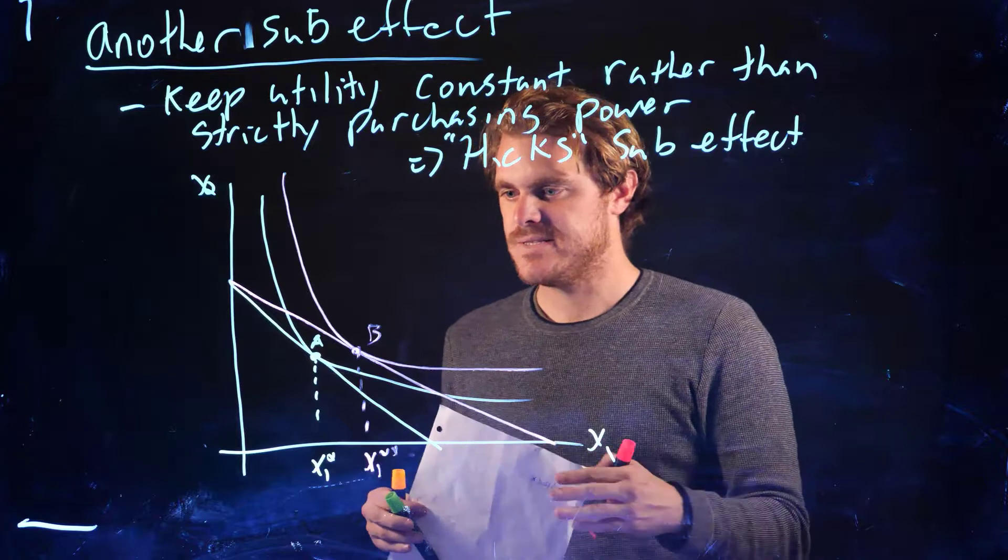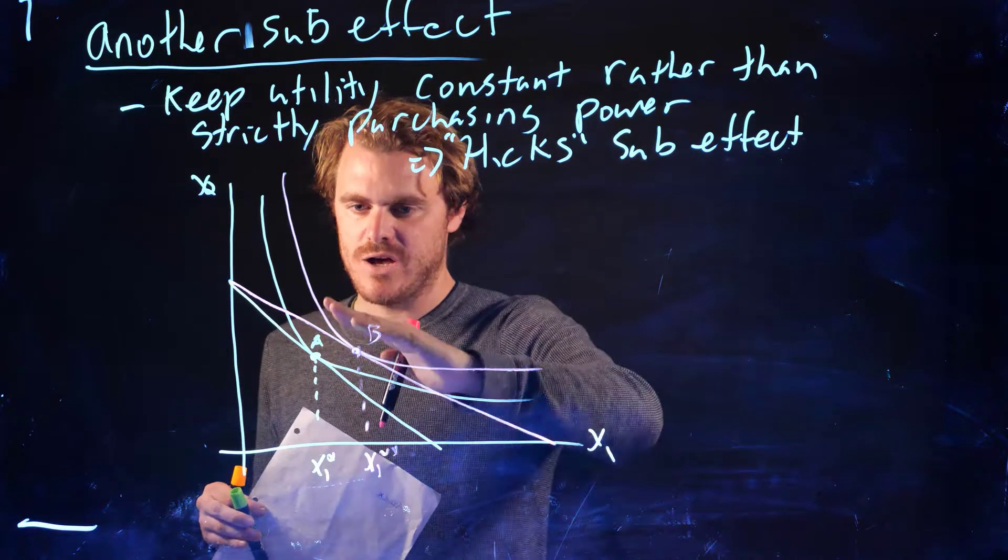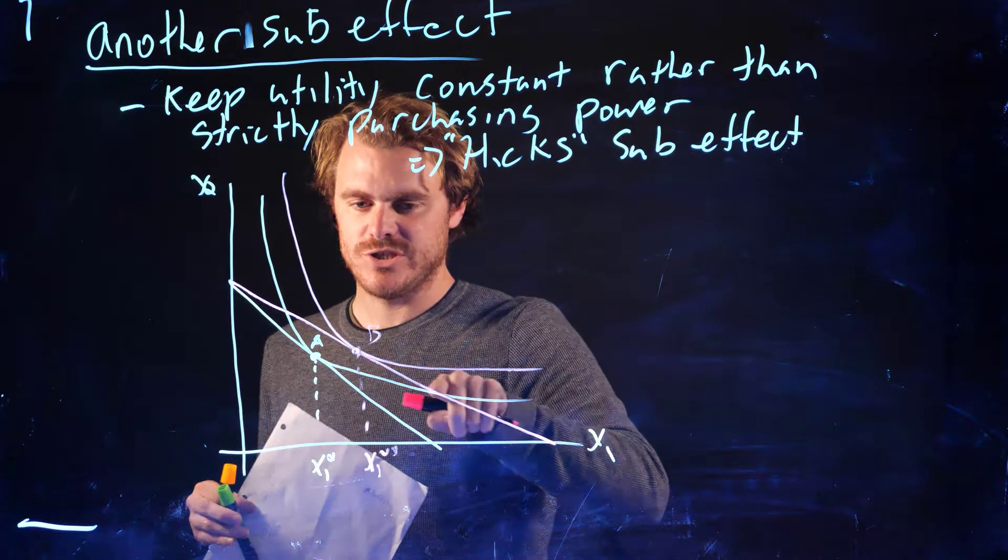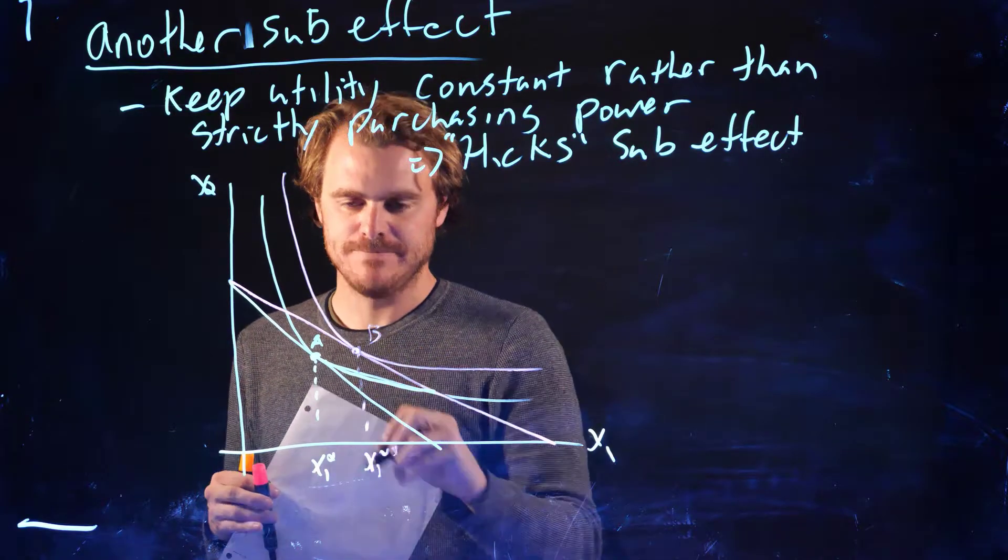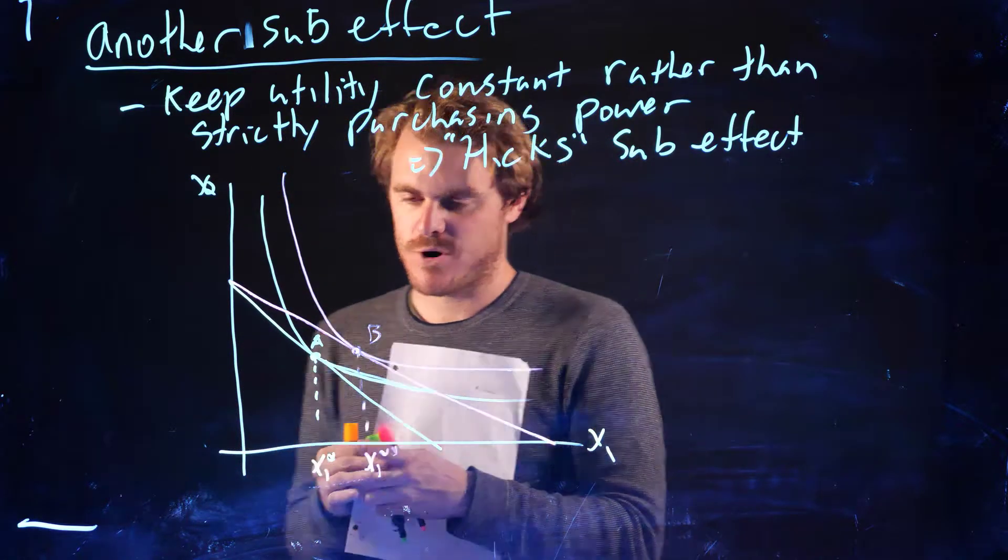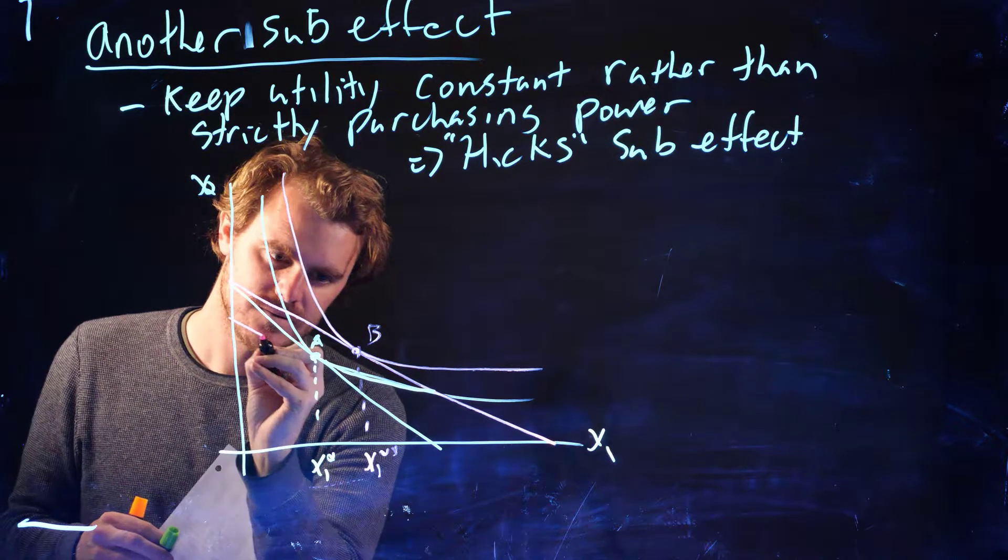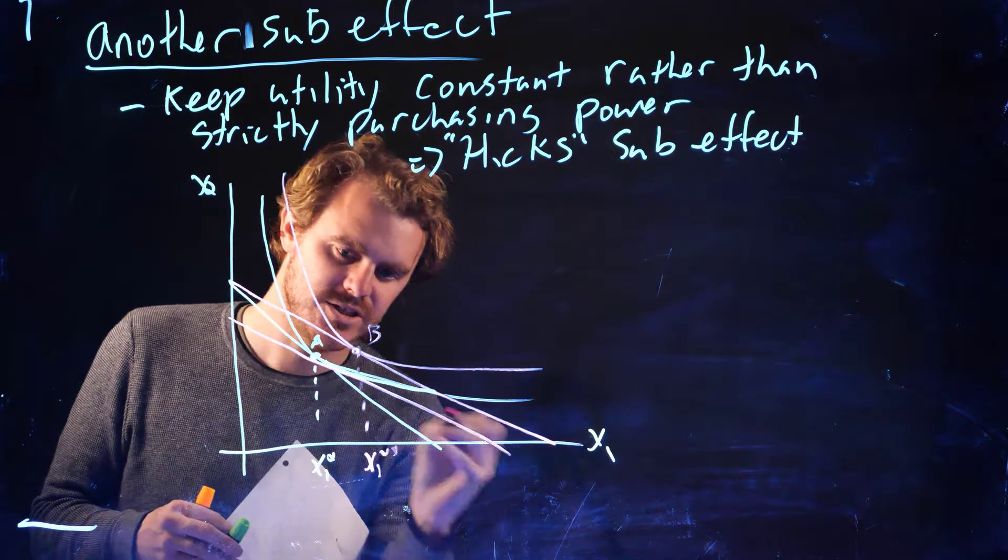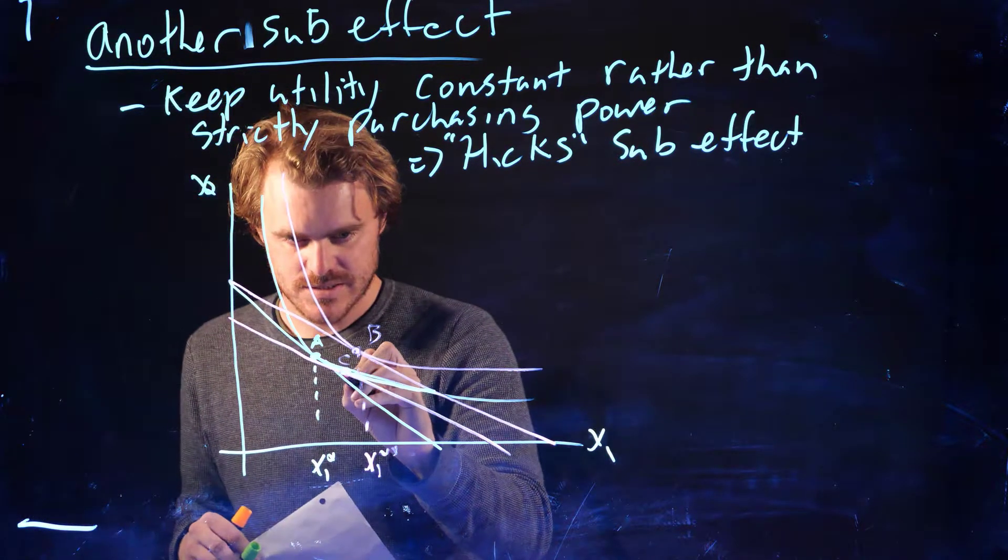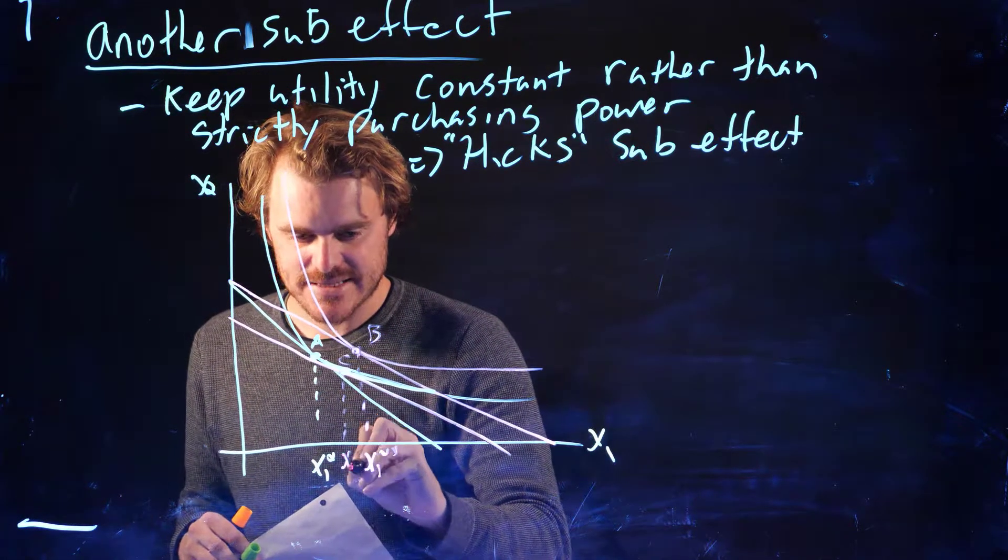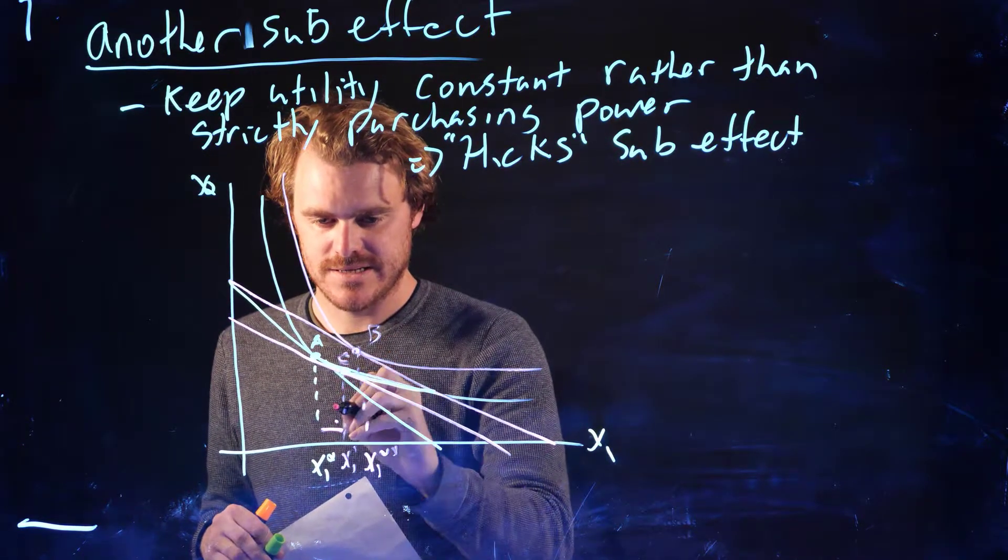And now instead of shifting this line down so it just passes through A, we're going to shift this line down so it just touches the old indifference curve. I'm going to draw this a little bit better. I'm going to take this purple line and shift it down until it just touches the old indifference curve. Let's say it happens right around there. And that's x1 prime. Now this is going to be the sub-effect.